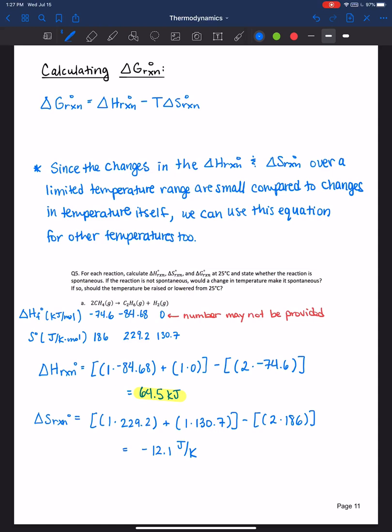Now we want to calculate Gibbs free energy. Usually Gibbs free energy is in kilojoules. A lot of times you will need to convert this into kilojoules. So divide it by a thousand and you would get negative 0.0121 kilojoules per Kelvin.